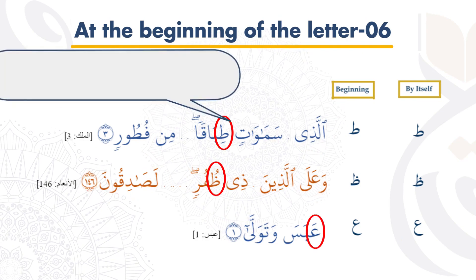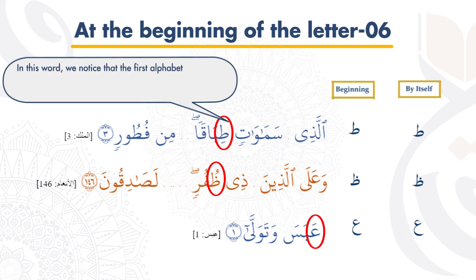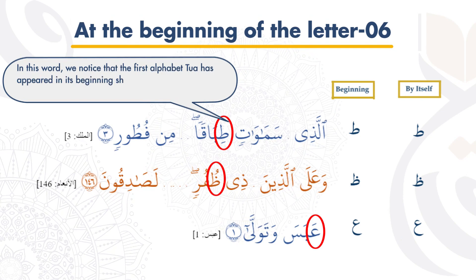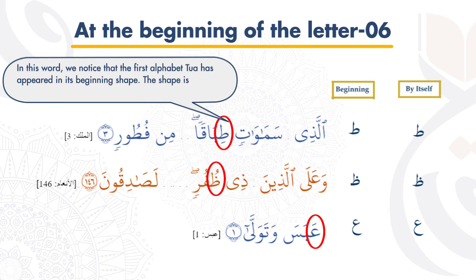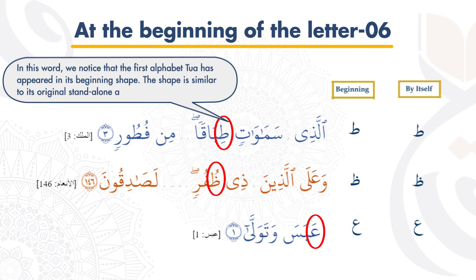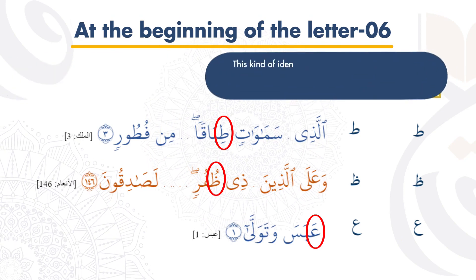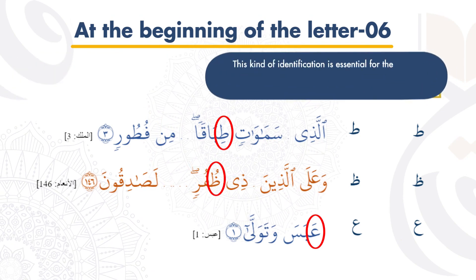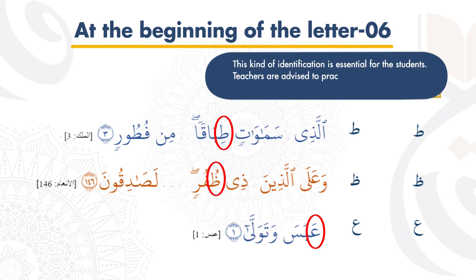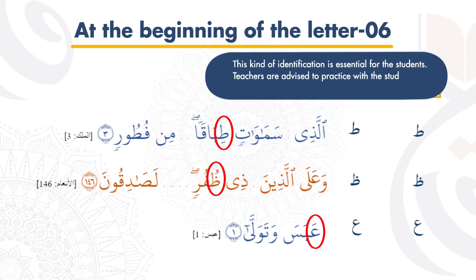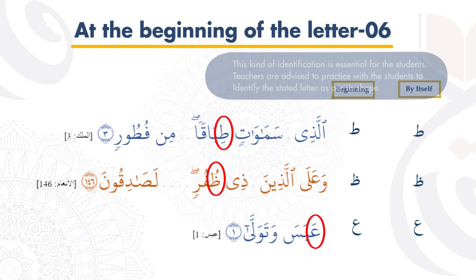In this word, we notice that the first alphabet has appeared in its beginning shape. The shape is similar to its original standalone appearance. This kind of identification is essential for the students. Teachers are advised to practice with the students to identify the stated letter as per its shape.